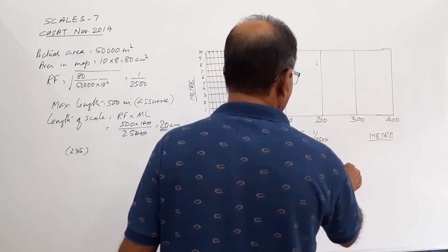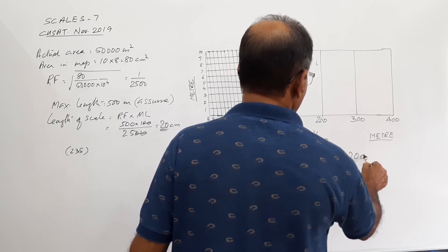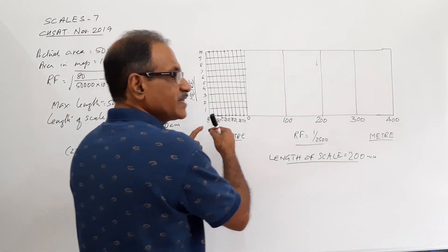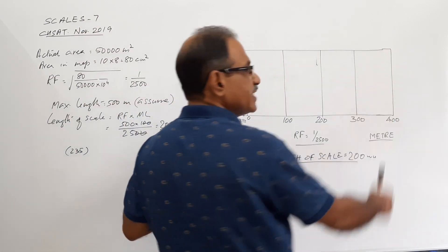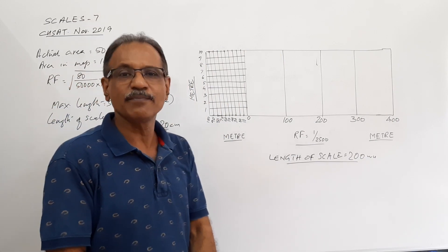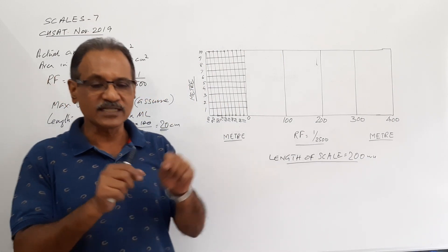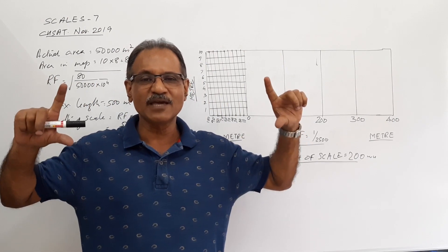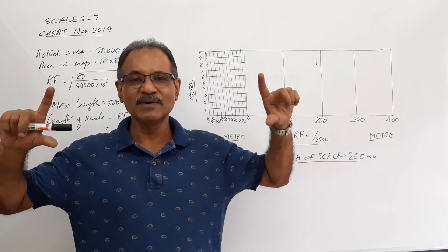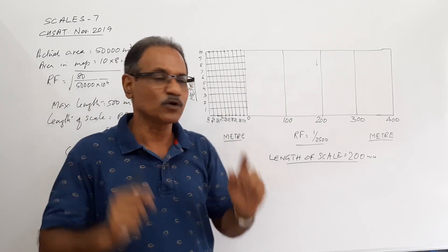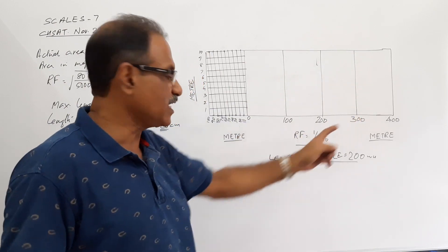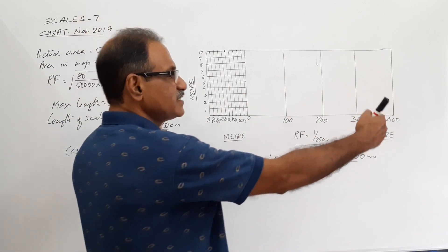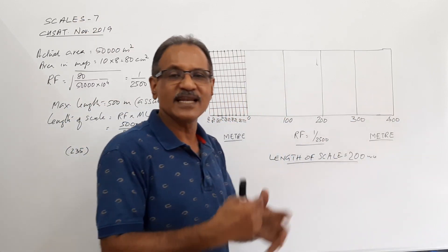I draw a rectangle whose length is 20 centimeters and breadth is 5 centimeters. As I mentioned at the beginning of diagonal scale, when the length is more than 15 centimeters, preferably keep a width of 5 centimeters for a reasonably impressive appearance. So I construct a rectangle whose length is 20 centimeters — which is calculated and cannot be changed — and breadth is 5 centimeters. This length represents 500 meters.